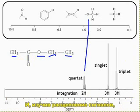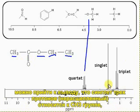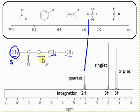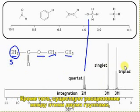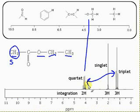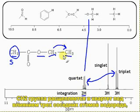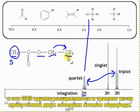Looking at coupling, the 3-hydrogen singlet does not couple and so must be the CH3 group on its own next to the carbonyl — that's the singlet. However, there is coupling between the other two groups. The CH2 group here is split into a quartet by those three hydrogens on the neighbouring carbon, and this CH3 group is split into a triplet by the two hydrogens on this carbon.